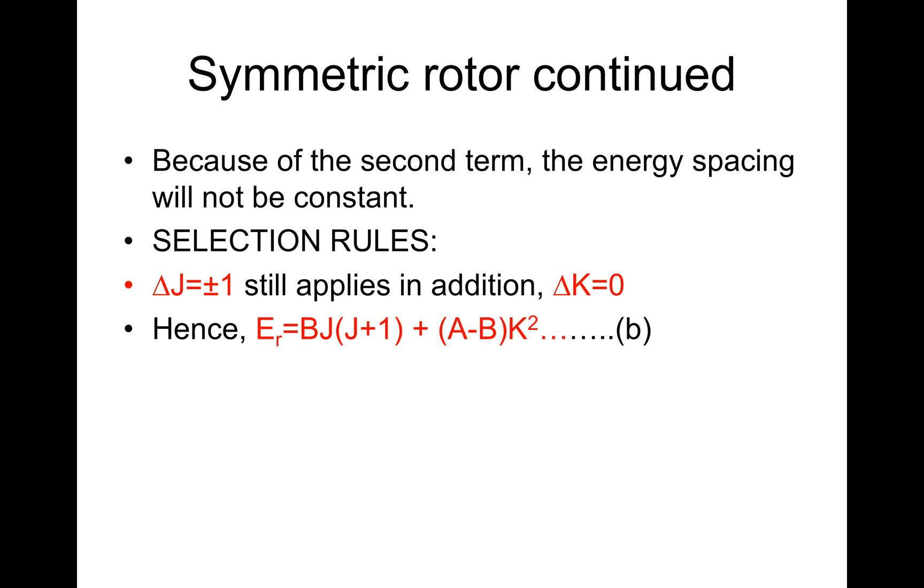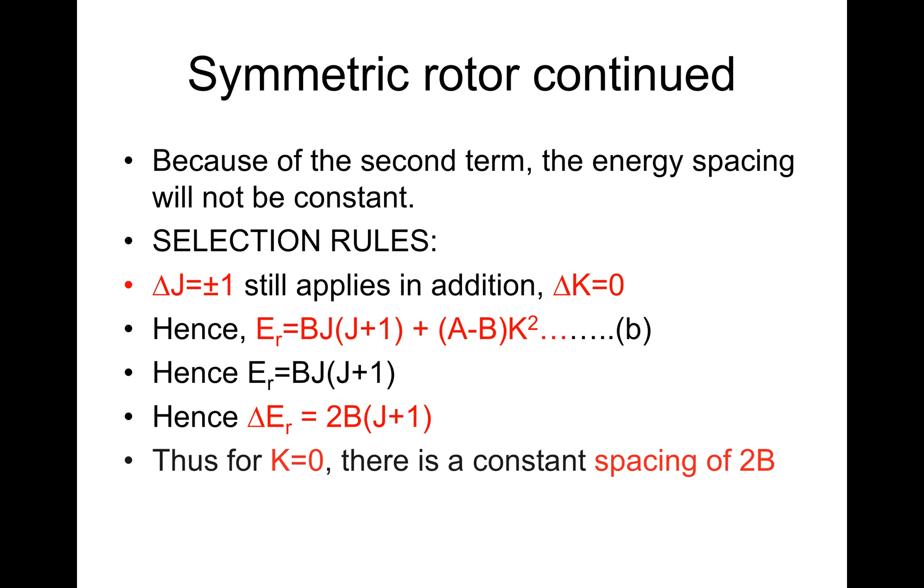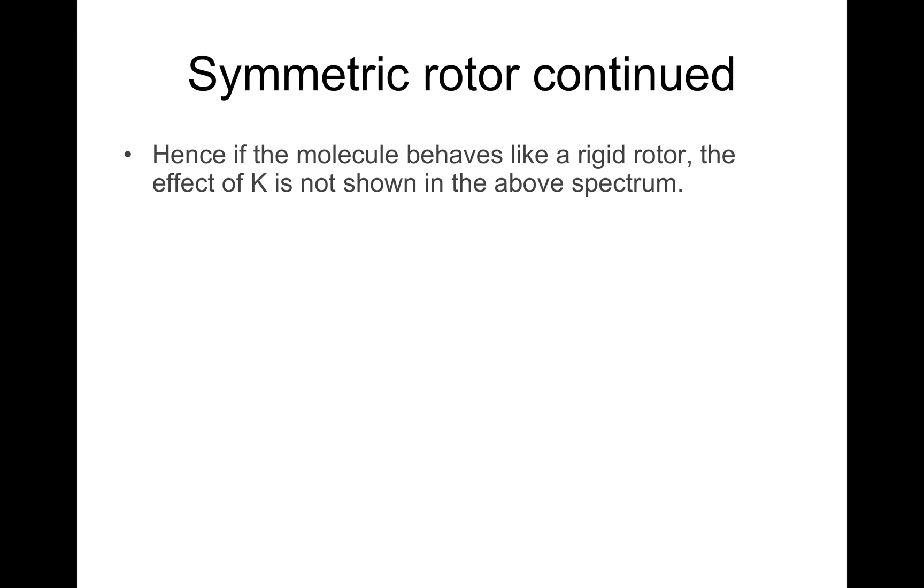Hence, ER equals BJ(J+1) plus (A minus B)K². Call this equation B. Hence, ER equals BJ(J+1). As for K equals 0, there is a constant spacing of 2B, like before.